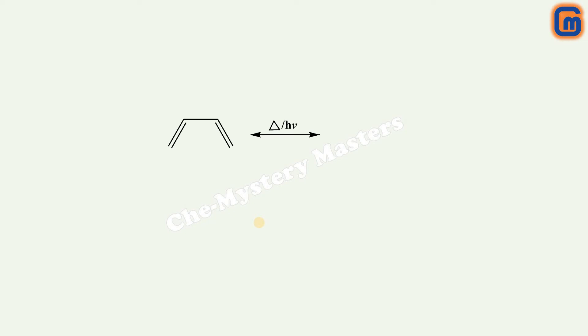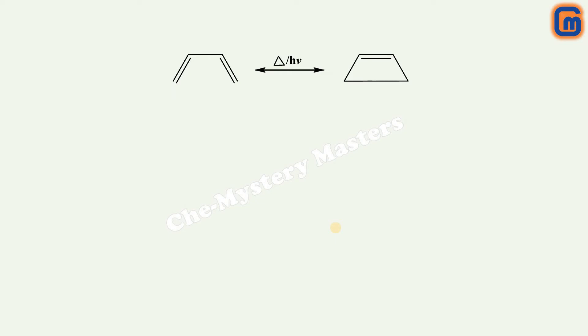We have taken the example of 1,3-butadiene, where this reaction can take place in the presence of light or heat, giving a cyclic product. In this product, there are two pi bonds in the reactant while there is a single pi bond in the product, and between the first and fourth carbon there is formation of a sigma bond. In this video we are going to discuss the formation of this sigma bond and what symmetry is present in the orbital when this sigma bond is produced.